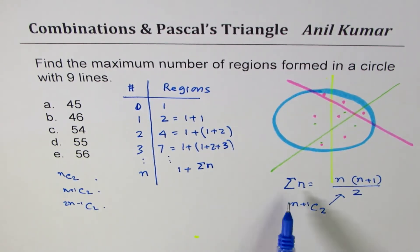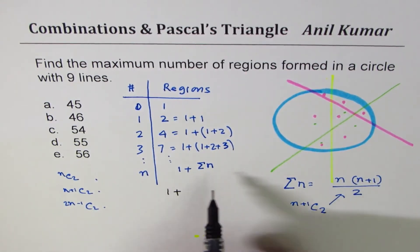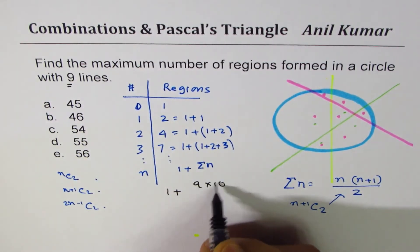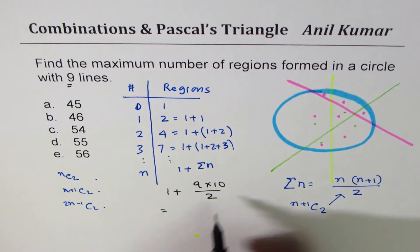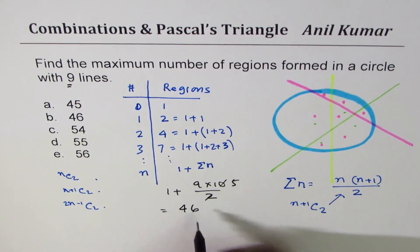Let's find the answer now to match. So the answer is 1 plus, we are talking about 9 lines, 9 times 10 divided by 2. That is, this goes 5 times, 45, and 1 is 46.